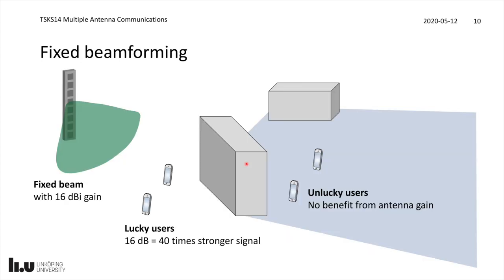Traditionally, multiple antennas have been used to achieve fixed beamforming. The typical base station antennas you see on rooftops and towers are these vertical panels, creating a fixed beam focused right in front of the array. You have a certain area — say 120 degrees — that you're supposed to cover with your antenna, focusing the signal down towards the ground where the users are. This is a so-called 16 dBi antenna, which means that if you're standing right in front of it you get a 16 decibel stronger signal compared to having a single omnidirectional antenna.